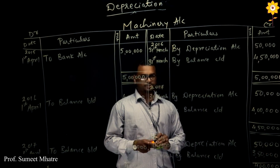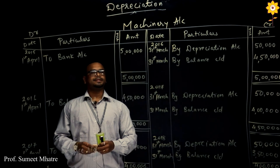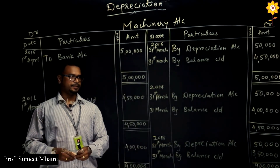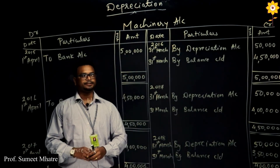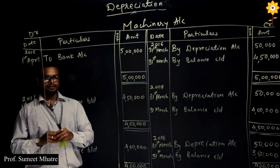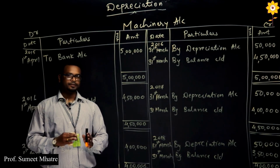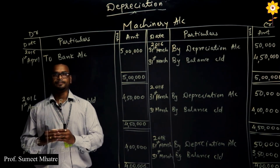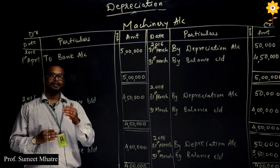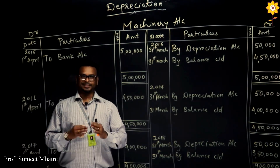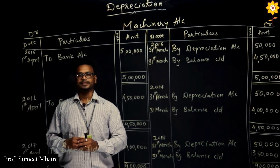This was the simple problem for depreciation under Straight Line Method. While solving depreciation, we have to keep in mind — the most important is the year and the month when the machinery or the asset is purchased. We have to check that and solve accordingly. This is what the first step of depreciation is.